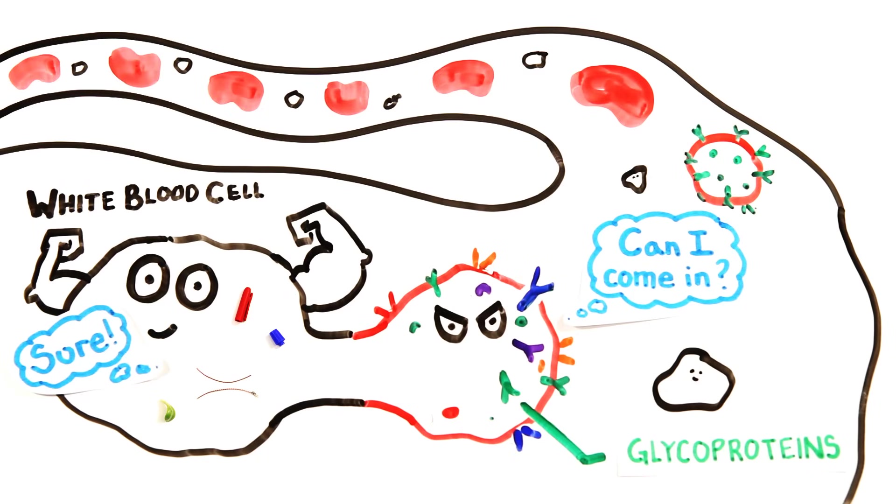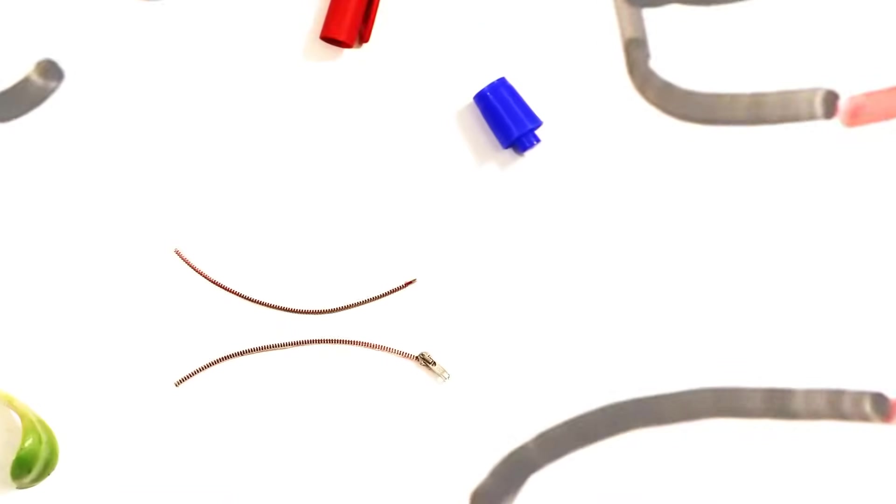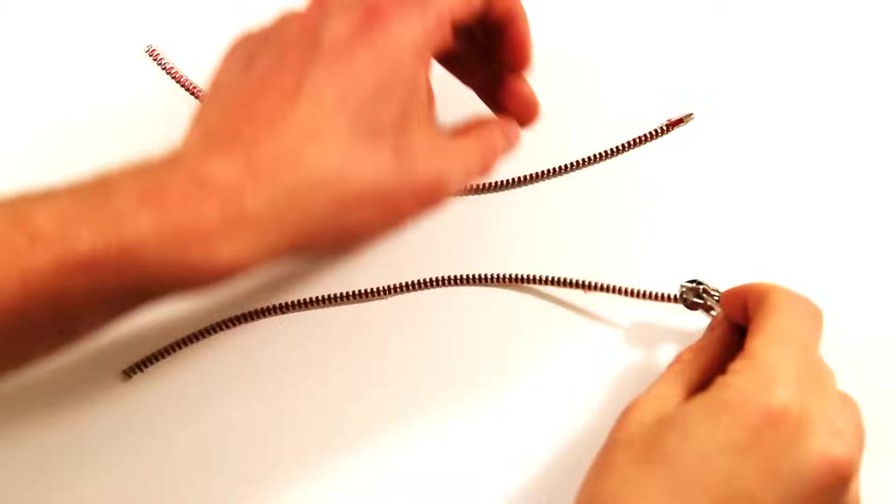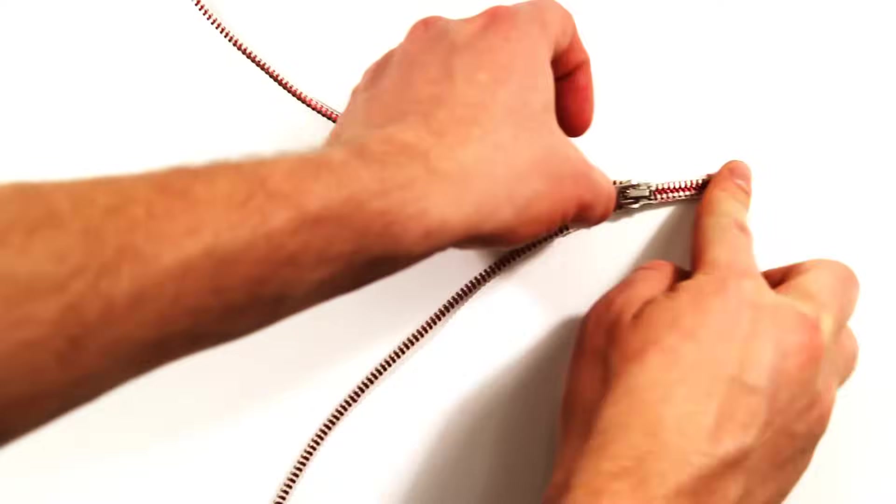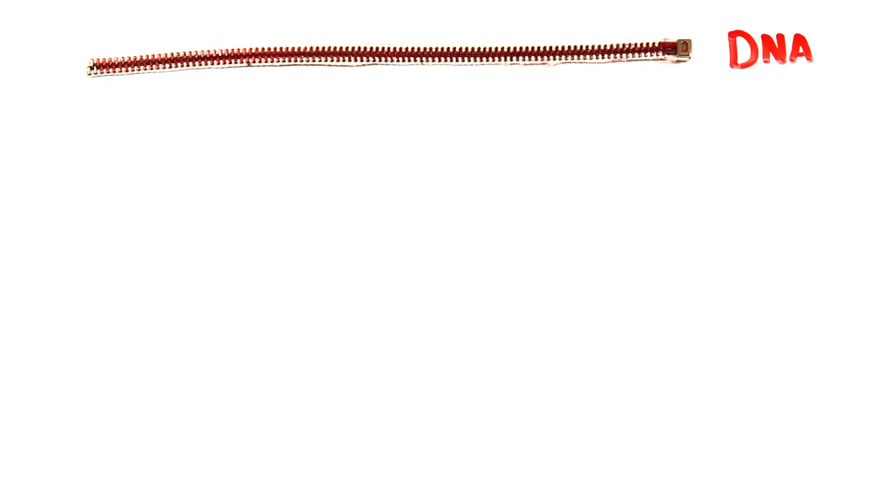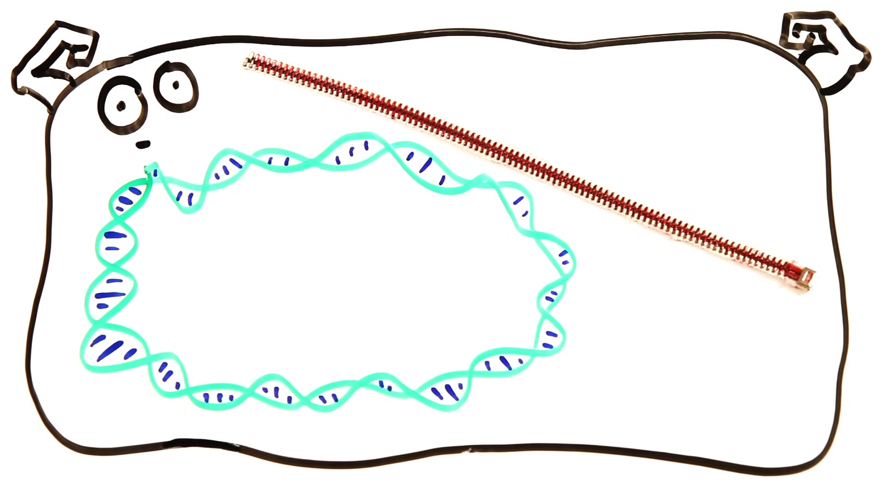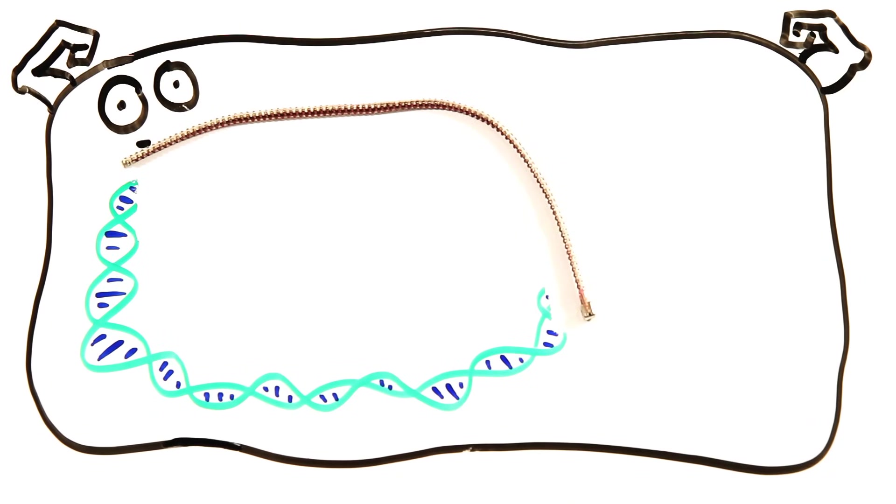Because HIV is a retrovirus, the RNA is transcribed into DNA, represented here by a zipper of two RNA strands transcribing into DNA. This DNA is then integrated into the host cell's genome. This makes the T cells treat the viral genes like their own, which causes them to make more copies of the virus.